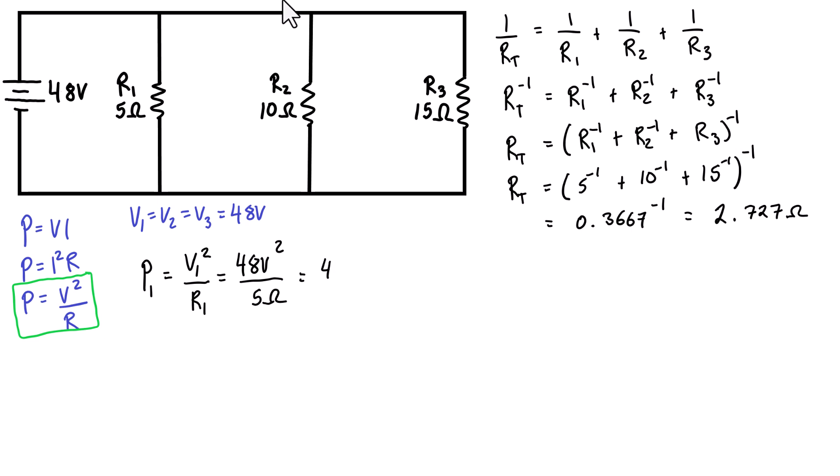We can do the same thing for the next resistor. P2 equals V2 squared over R2, which is 48 volts squared over 10 ohms, and this works out to be 230 watts.